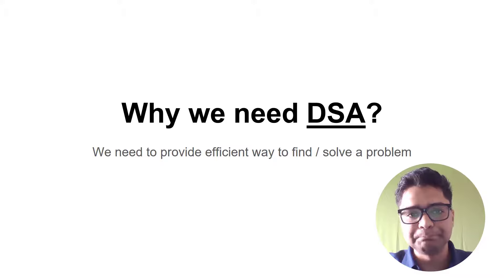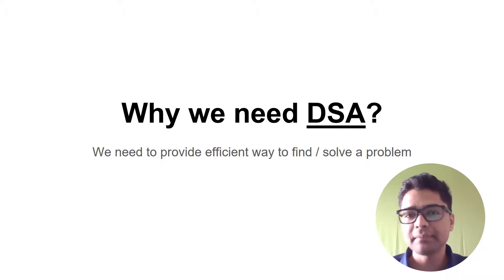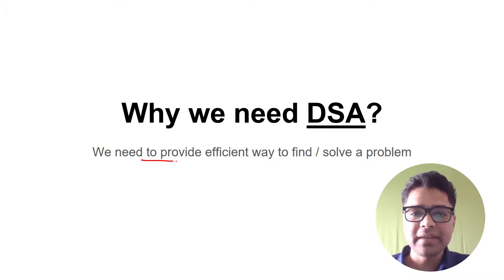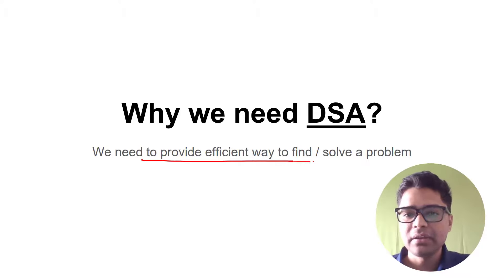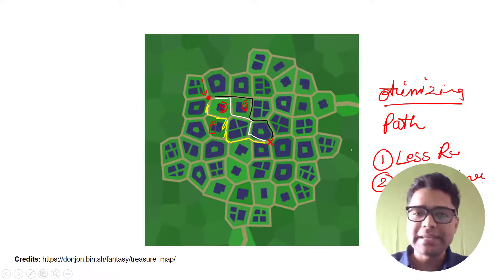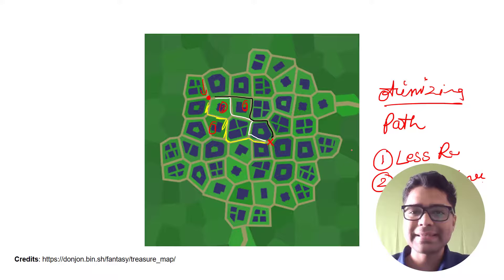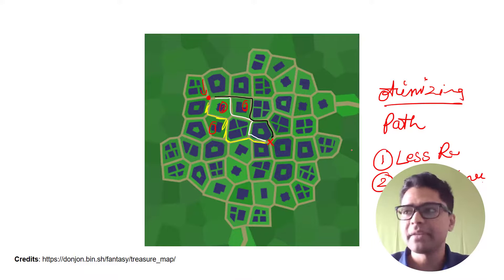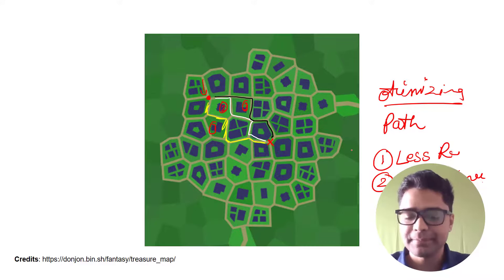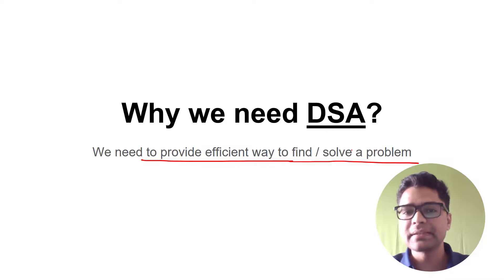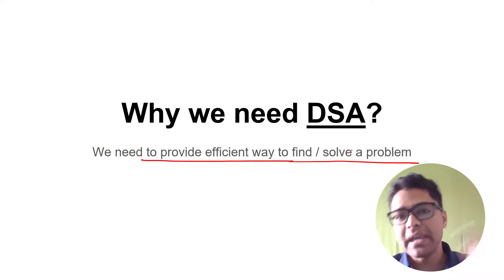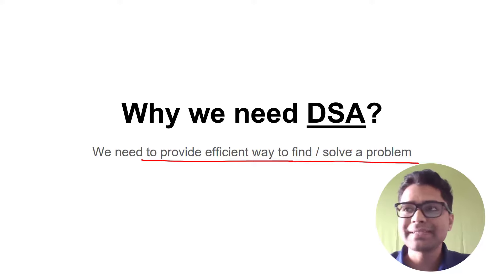Now the question is: why do we need DSA? We need to provide an efficient way to find or solve a problem. Using the previous example, the problem was to get from point zero to X in the shortest path, using less resources — maybe horse, petrol, or gas — and saving time. That is why we need DSA.